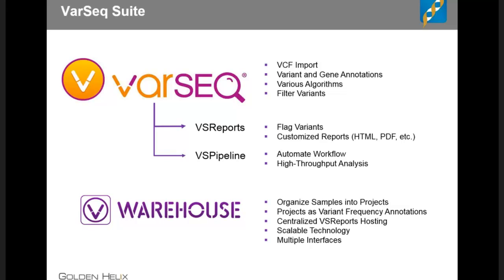Once you've identified your variants of interest, our reporting functionality comes into play with VS Reports. You flag those variants of interest and they are included in customized reports available in HTML format, easily saved as PDF. We'll look at an example of one of these reports today. Once you've decided your workflow — annotation sources and filtering — our command line functionality, VS Pipeline, can automate that workflow, running samples automatically and producing automated deliverables for high-throughput analysis.